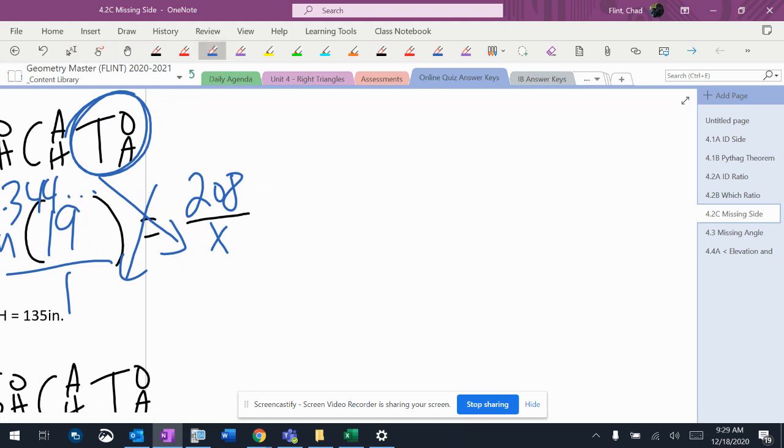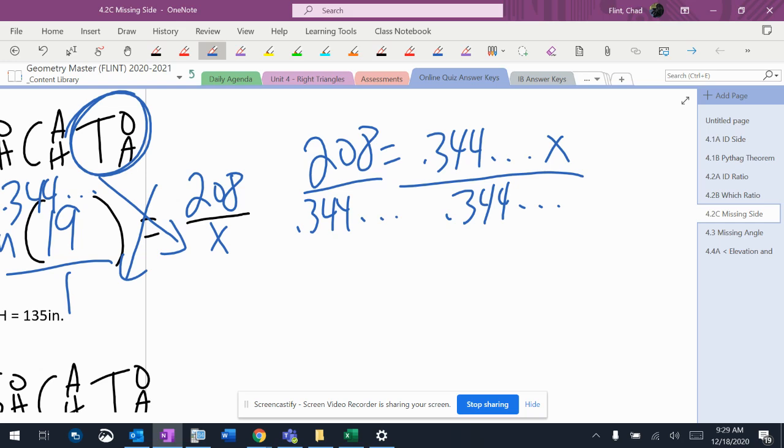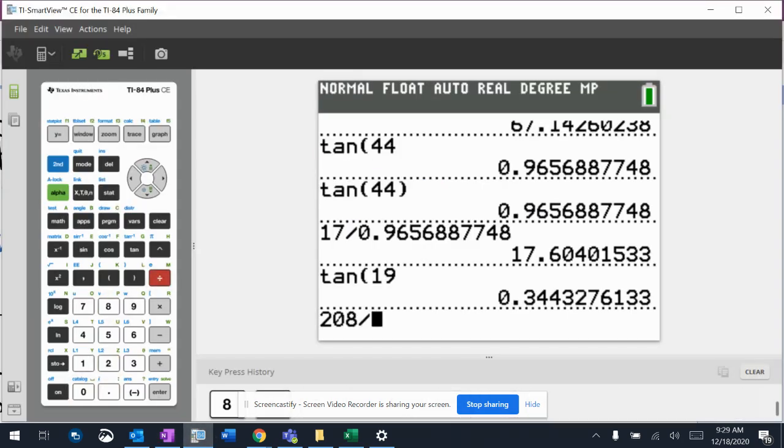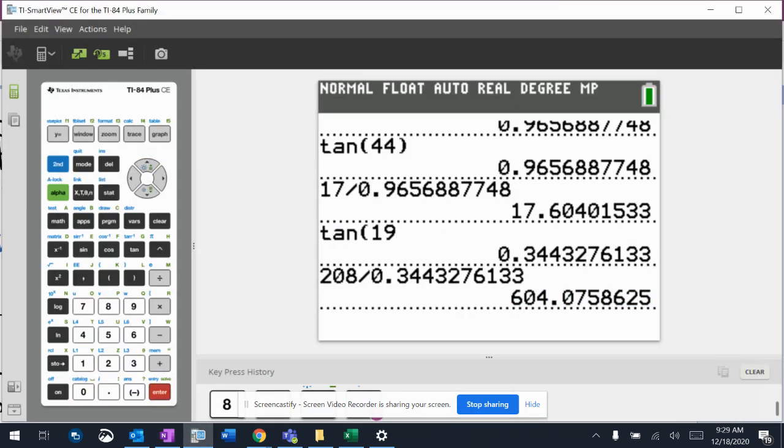And I get 208 is 0.344X. I'll do that division, 208 divided by that decimal. Give me 604.075.